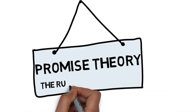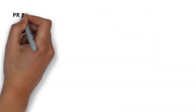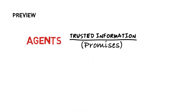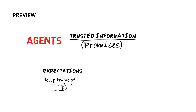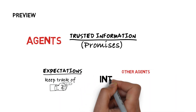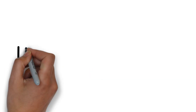Promise Theory Part 2: The Rules of Delegation. In the first part of this series we looked at how agents rely on trusted information called promises to keep track of their expectations about how other agents intend to behave. In the second part we'll draw explicit interaction diagrams or graphs and see how to use these to document the uncertainties and trace the flow of intent when agents work together.